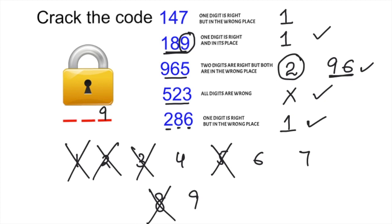The digit is correct, but it's not in the right place. So if it's not in the right place, it can't come here. 6 can't come at the 1's place. 6 can't come in the middle place. That means 6 will come in the first place.